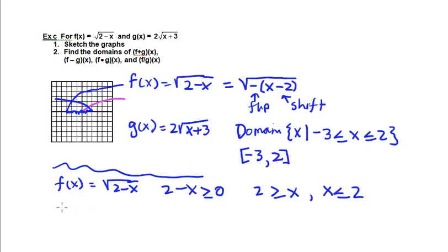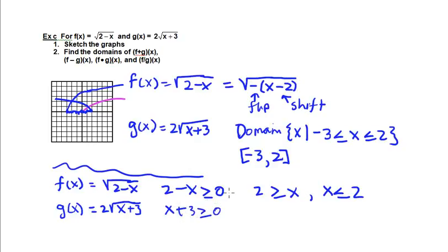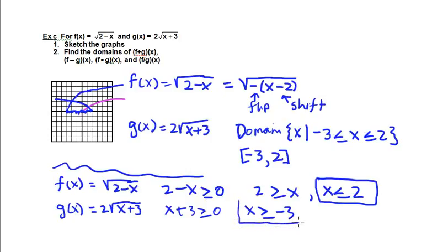We do the same for g of x equals 2 times square root of x plus 3. We need the inside of the radical to be greater than or equal to 0, so x plus 3 is greater than or equal to 0, which gives x greater than or equal to negative 3. Now we have two inequalities: x is less than or equal to 2 AND x is greater than or equal to negative 3 — an intersection of the two intervals.